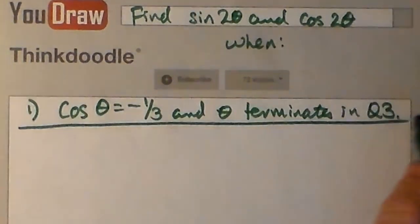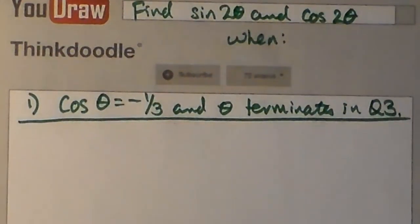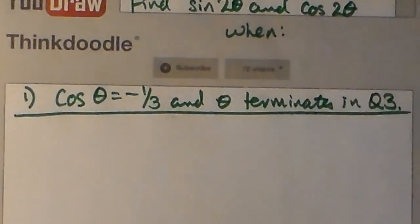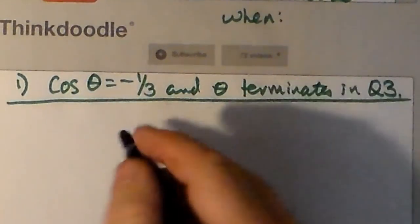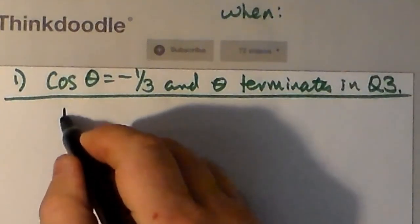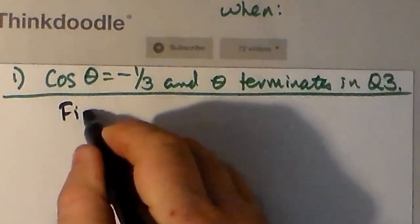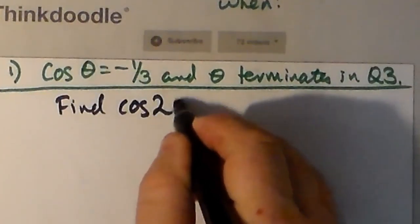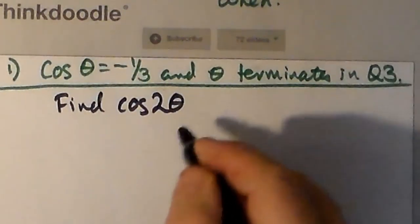We're trying to find sine 2θ and cos 2θ, and we're given that cosine θ is negative 1/3, and θ terminates in the third quadrant. We always have to keep in mind the restriction that it terminates in the third quadrant.